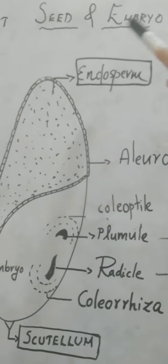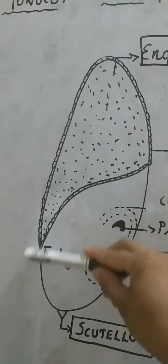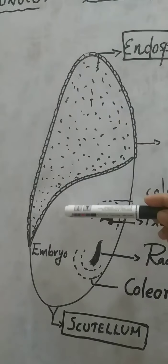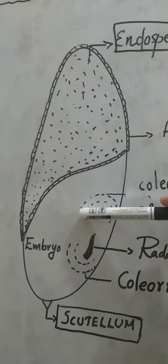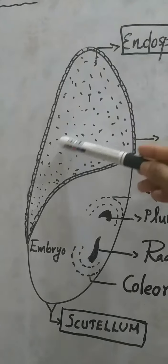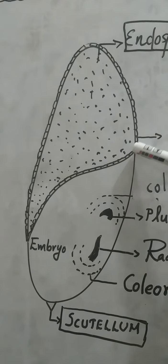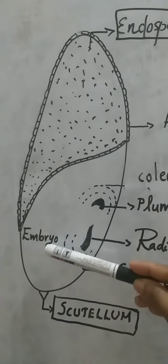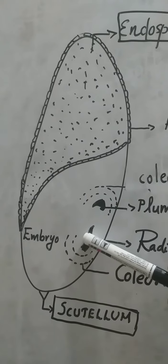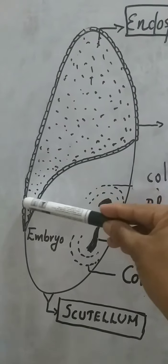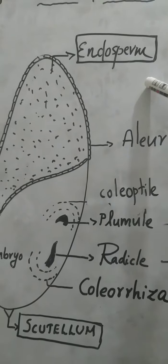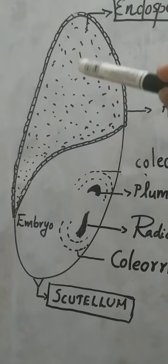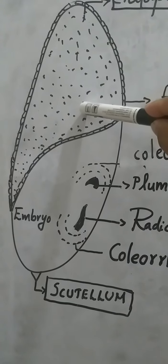This is the rough figure of a monocot seed. From the figure itself you can understand two different portions: one is shown as shaded, which is surrounded by a special structure, and the other portion which contains the embryo. This entire portion is known as endosperm, which contains nutritive tissue.